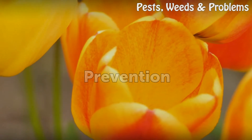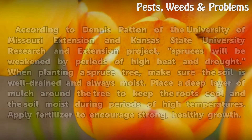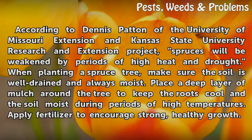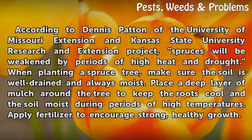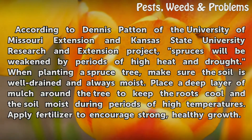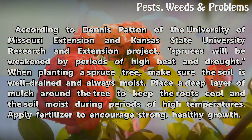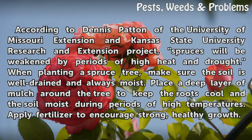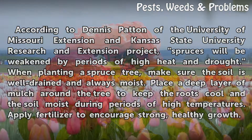Prevention. According to Dennis Patton of the University of Missouri Extension and Kansas State University Research and Extension Project, spruces will be weakened by periods of high heat and drought. When planting a spruce tree, make sure the soil is well-drained and always moist. Place a deep layer of mulch around the tree to keep the roots cool and the soil moist during periods of high temperatures. Apply fertilizer to encourage strong, healthy growth.